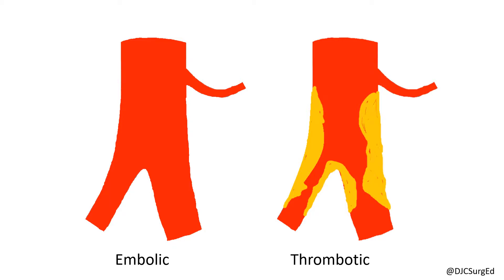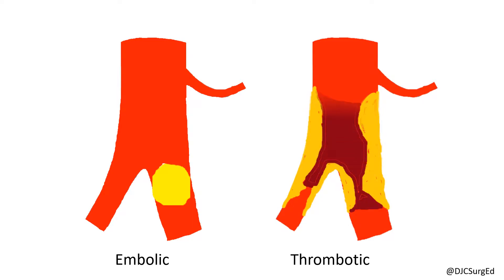Acute limb ischemia is either embolic, as seen on the left, or thrombotic, as seen on the right. Let's take a look at the embolic causes of acute limb ischemia and important components of the history, physical exam, and diagnostic workup to identify these potential causes.